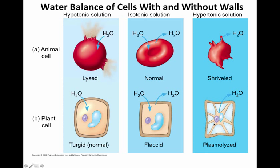If an animal cell is placed into a hypertonic solution with higher solute outside, water moves out and the animal cell will shrivel. If a plant cell is placed into a hypertonic solution, this plant cell will also lose water. The cell wall will not protect the cell — the cell membrane will eventually detach itself. This effect is called plasmolysis and it is lethal to plant cells.